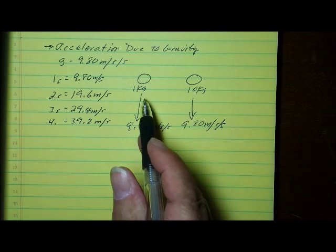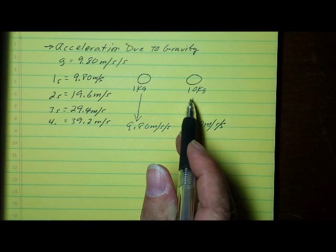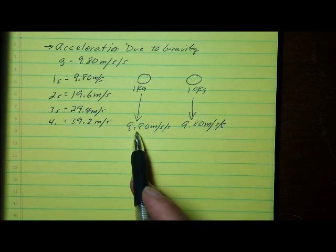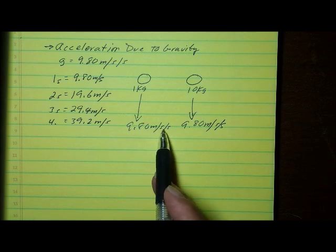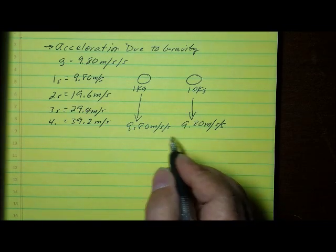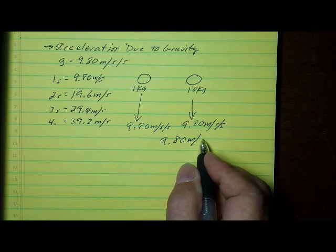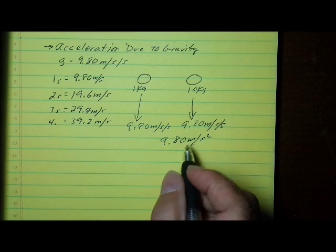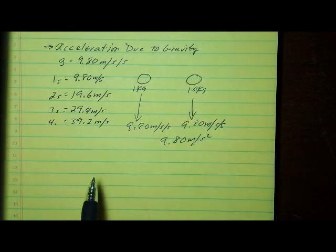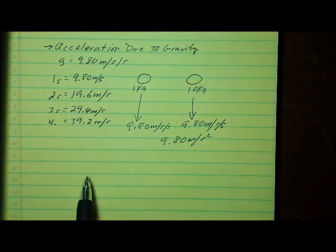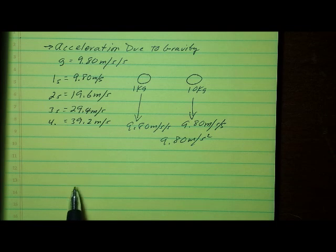So no matter whether the object is 1 kilogram, 10 kilograms, 20 kilograms, or 50 kilograms, it will always accelerate downward at 9.80 meters per second per second, which you can also write as 9.80 meters per second squared. It makes no difference what the mass of the object is — the velocity will always increase as it falls at a rate of 9.80 meters per second squared.